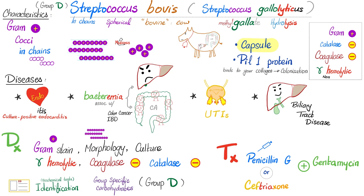How about Enterococci? They were also group D, as covered in the previous video. Streptococcus pyogenes is group A. Streptococcus agalactiae is group B.